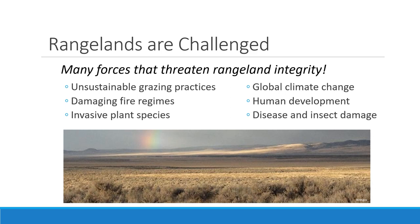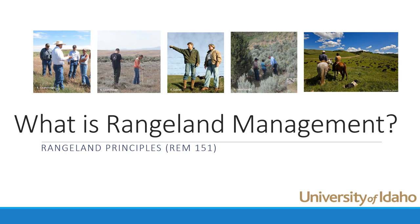As we leave, don't forget the many challenges on rangeland. Forces that threaten rangeland integrity include unsustainable grazing practices, damaging fire regimes, invasive plants, global climate change, human development, and diseases and insects that damage plants and animals. These are challenges that we can manage, and we need more bright, ingenious people working together to address them. I hope I gave you an overview of what rangeland management is — this planning process — along with guiding principles and the challenges that we face on rangelands. Thanks.